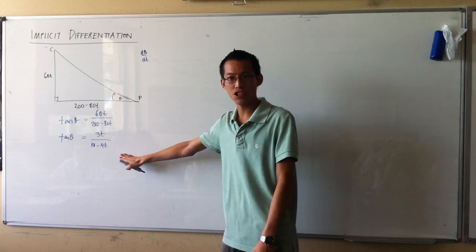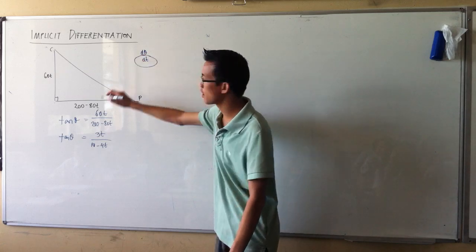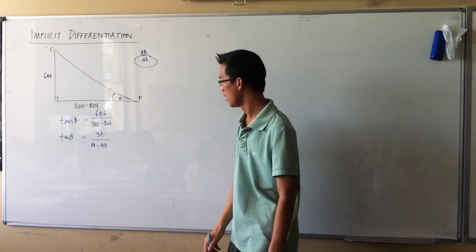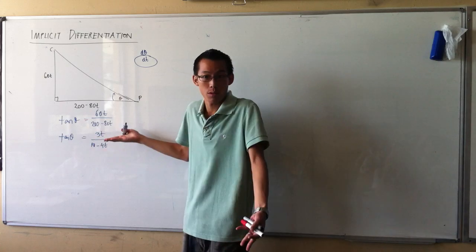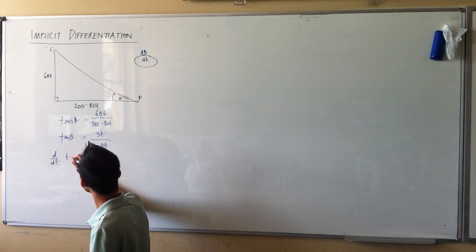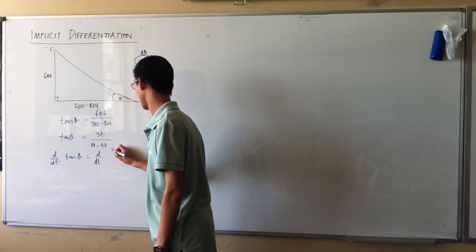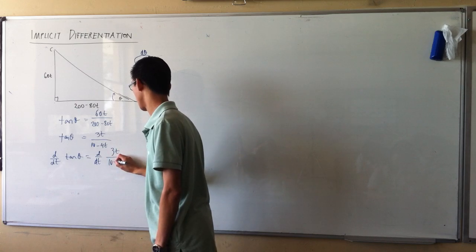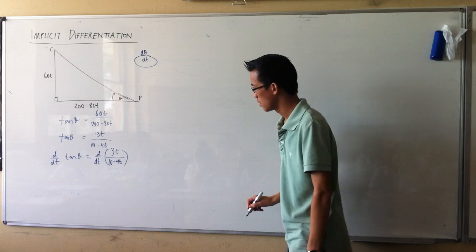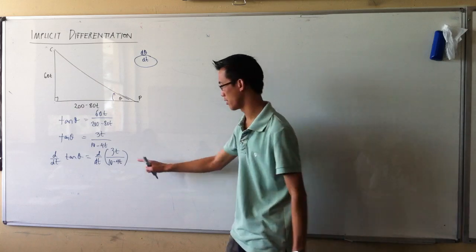But I can differentiate this using implicit differentiation. How do I do it? The variable I'm interested in differentiating with respect to is t. So I'll differentiate both sides with respect to t. Here's how it works. So it's d/dt, tan θ equals d/dt of 10 minus 4t over 3t. Now let's see, let's just start with the part that we do know how to do. So this right hand side, it's just quotient rule if you remember.